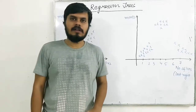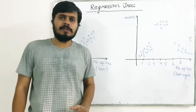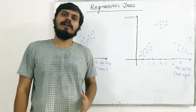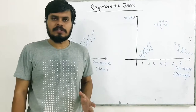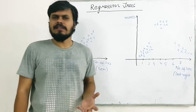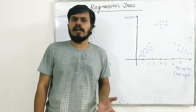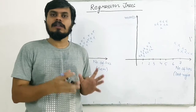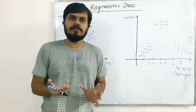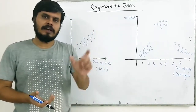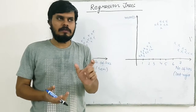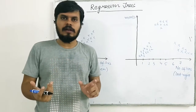Hi guys. So far, everything we have done in decision trees was all related to classification. And in fact, decision tree is one such algorithm which is very highly used in classification problems — where the target column is categorical.